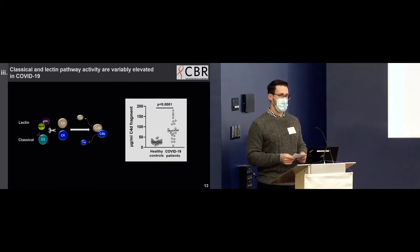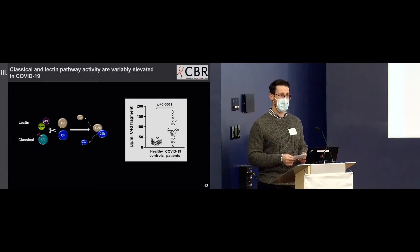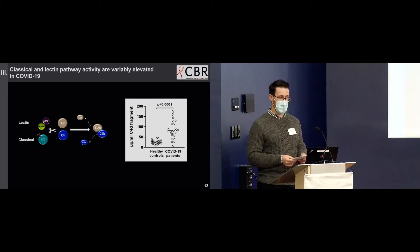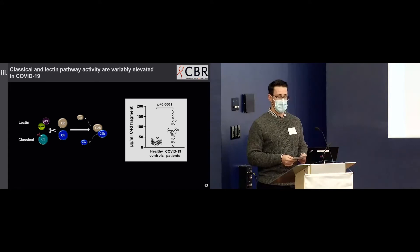We also assayed the C4B degradation product C4D, which is generated by both the classical and lectin pathways, and found that there was variable activation of these pathways in this cohort. These findings are particularly significant to the use of anti-complement therapeutics. We and other groups have seen that it is the alternative pathway that is most and consistently active, suggesting that therapeutics targeting the alternative pathway could be the most useful.